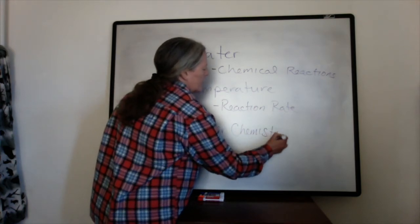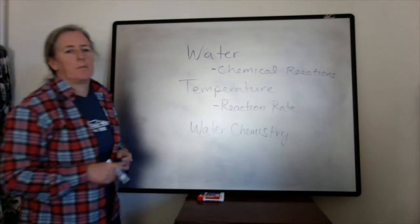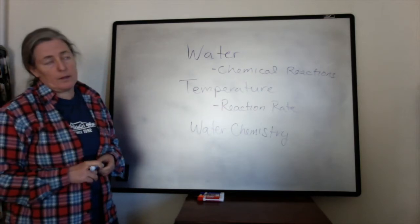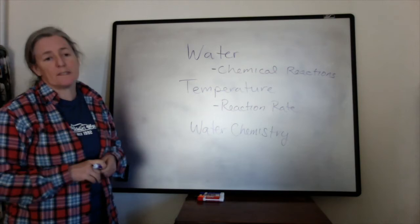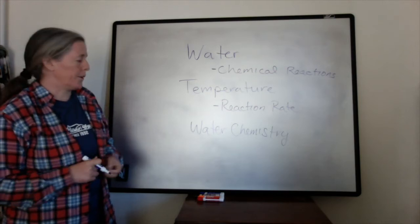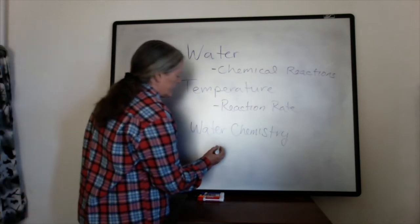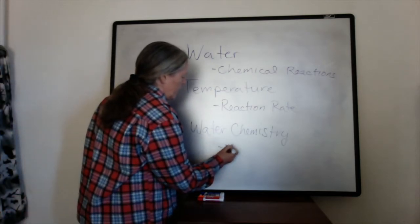A number of the reactions, for example weathering plagioclase, consume acidity. And so more acidic water can cause a lot of weathering reactions to occur more quickly.